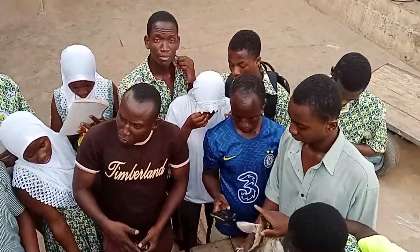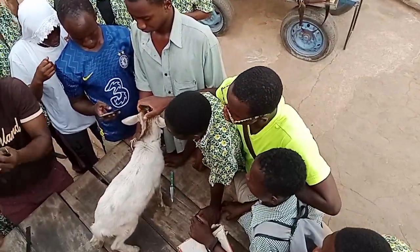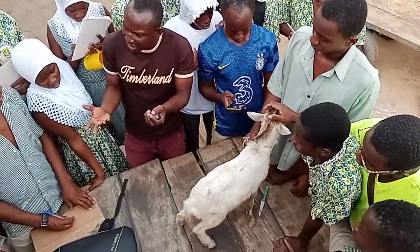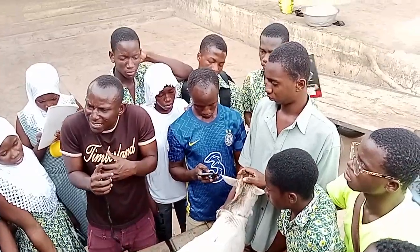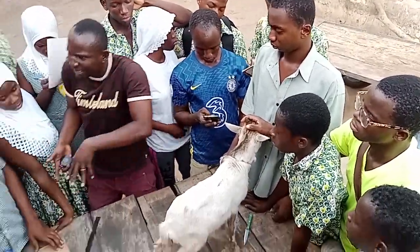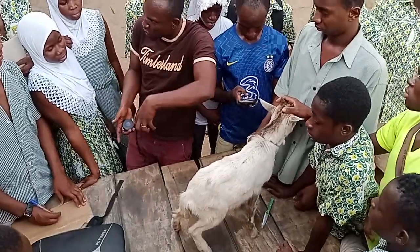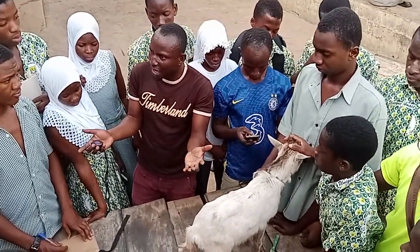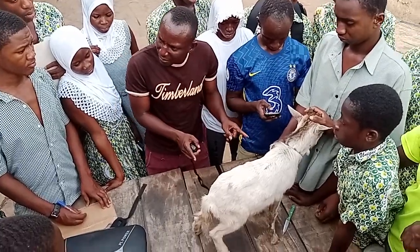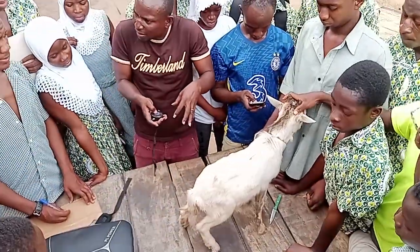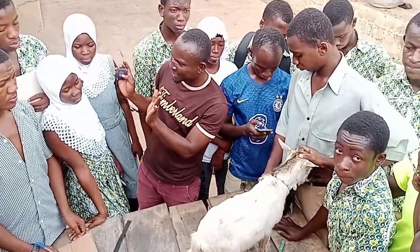Since they are illiterate, they cannot read, and sometimes they find it difficult to even read on the scales. So we are trying to see if we can get something that will be able to replace the body weight, since they cannot determine the weight using a weighing scale. So we are trying to see if looking at the animal physically will be able to tell or predict the weight. That is why the linear body measurements came in.